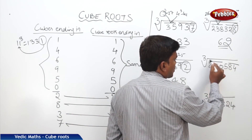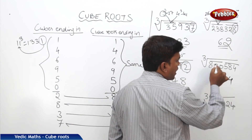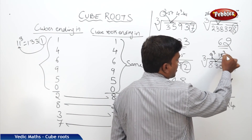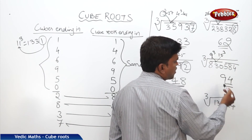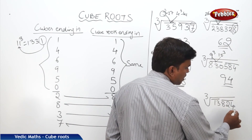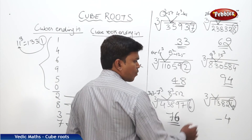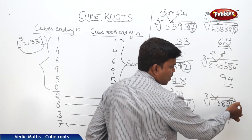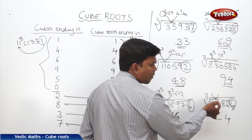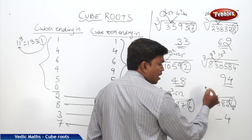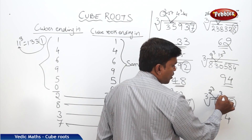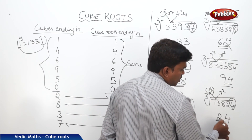Next: partition 3 and 3. The cube number ends in 4, so the cube root ends in 4. The second partition is 830, which comes between 9 cubed (729) and 10 cubed (1000). Take 9. So the answer is 94. For 13284: partition into 3 digits and the remaining 2 digits. It ends in 4, so the cube root ends in 4. The second partition is 13, which comes between 2 cubed (8) and 3 cubed (27). Take the lesser number, 2. So the answer is 24.